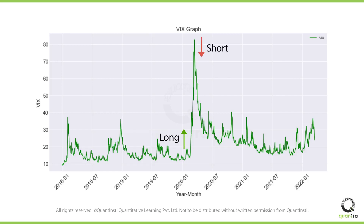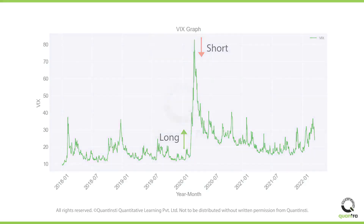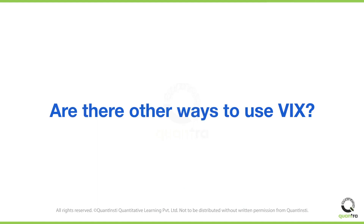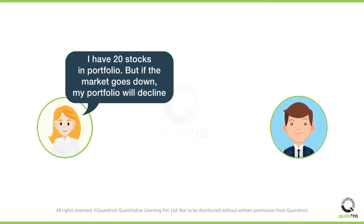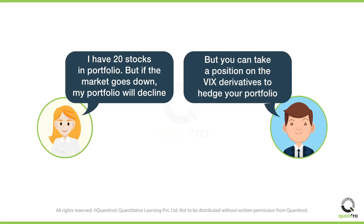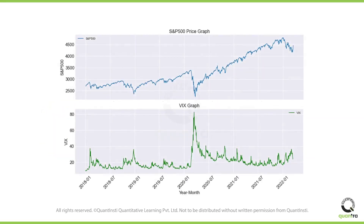In this way, you can use your knowledge about volatility and place your trades on VIX. Are there other ways to use VIX? Let's say that Sophie has a portfolio of 20 stocks in the US. But if the market goes down, her portfolio will decline. If you know that the VIX actually increases during unexpected events, you could take a long position on the VIX derivatives to hedge your portfolio. Let's see how that can happen. Here we have the S&P 500 price graph and the VIX graph.